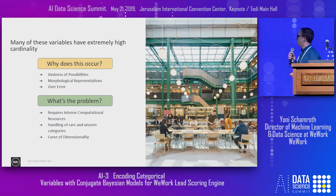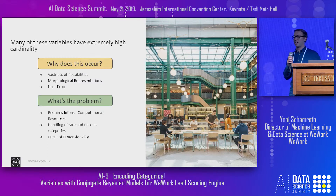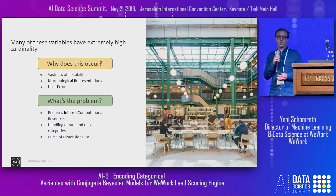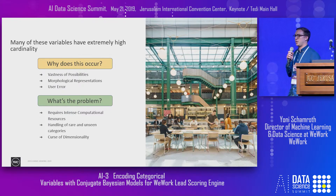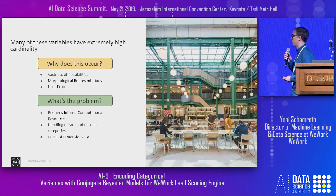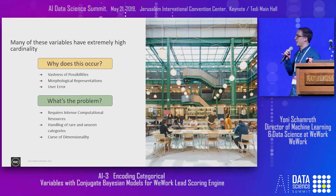In practice, many of these variables have extremely high cardinality. Why does this occur? Take the example of location, which is a common variable at WeWork. There's just a vast number of possibilities — WeWork operates in over 100 cities and has members and potential new members located globally.